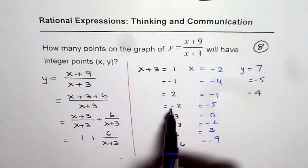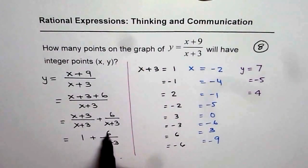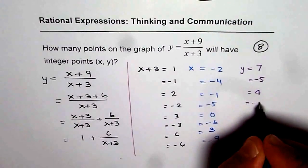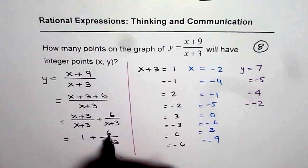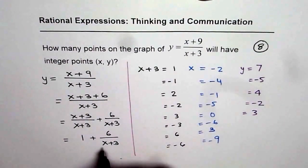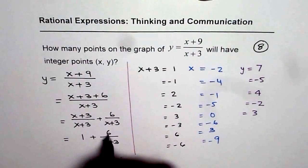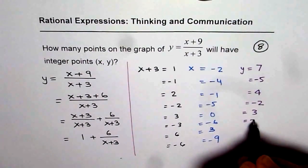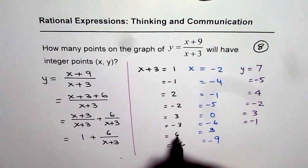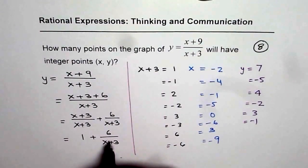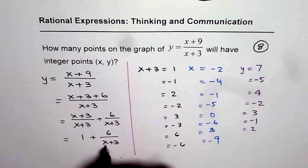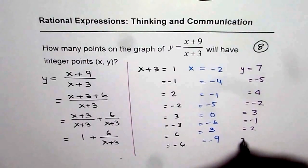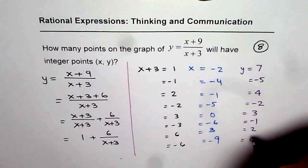Now, if x plus 3 is minus 2, 6 divided by minus 2 is minus 3, 1 minus 3 is minus 2. So again, this is minus 2. If it is 3, that means the denominator is 3, then this is 2, 1 plus 2 is 3. If denominator is minus 3, then it is 1 minus 2, which is minus 1. If the denominator is 6 or minus 6, if it is 6, then it gives me 1 plus 1, which is 2, and if it is minus 6, 1 minus 1 gives me 0. So these are the possible points.